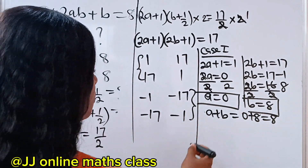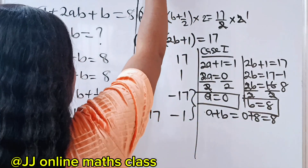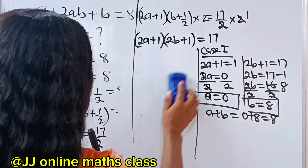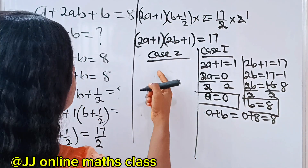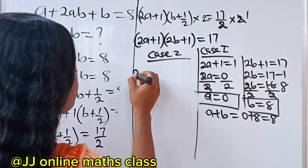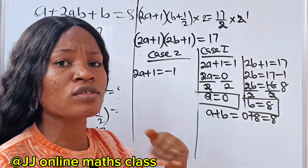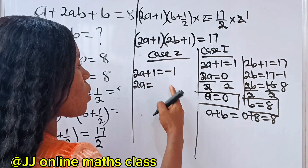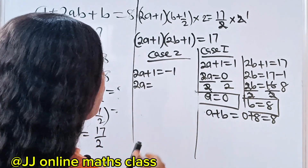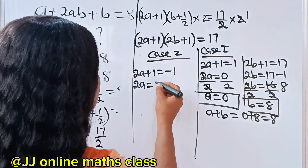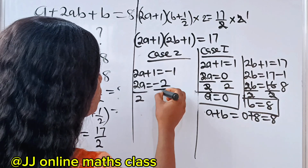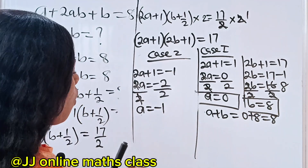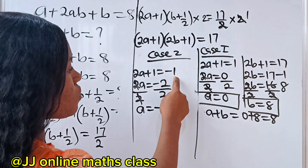Now let's consider the negative factors — that is Case 2. We use −1 and −17. So for Case 2: 2a + 1 = −1. Solving, 2a = −1 − 1 = −2, so a = −1.